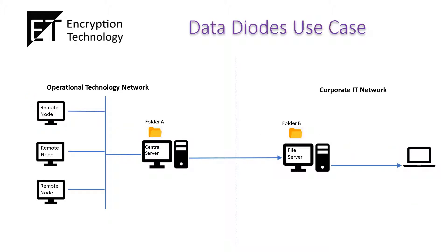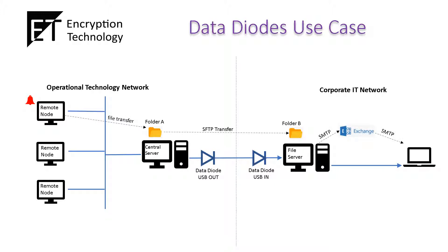To protect both the operational technology and corporate IT networks, data diodes can be introduced. Data diodes can be added to create an air gap between the networks. This way, data can only travel in one-way direction — from the operational technology network to the corporate IT network. This configuration will ensure data from the corporate IT network will not leak to the operational technology network, and the operational technology network will not be subjected to malware or virus attacks from the corporate IT network.